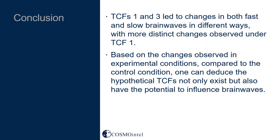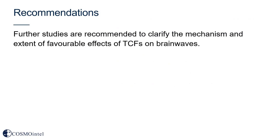In conclusion, T-consciousness fields 1 and 3 led to changes in both fast and slow brainwaves in different ways, with more distinct changes observed under T-consciousness field 1. Based on changes observed in experimental conditions compared to the control, one can deduce that the hypothetical T-consciousness fields not only exist but also have the potential to influence brainwaves. Further studies are recommended to clarify the mechanism and the extent of favourable effects of the T-consciousness fields on brainwaves.